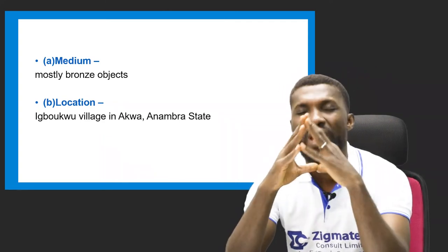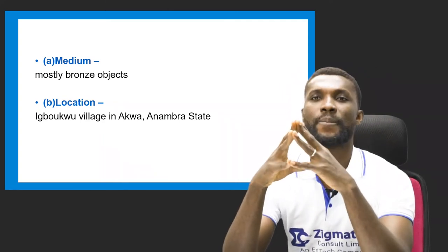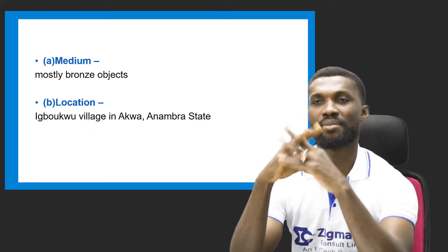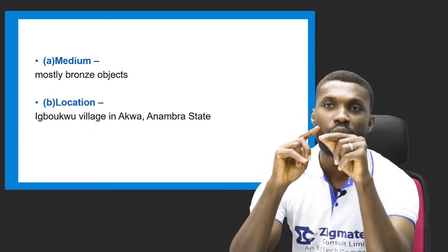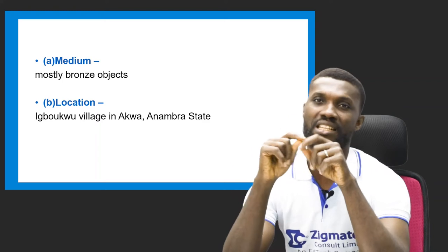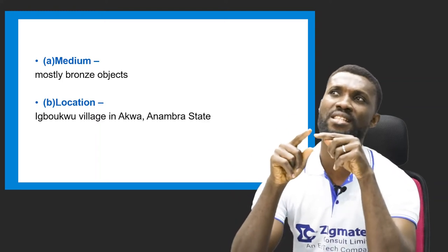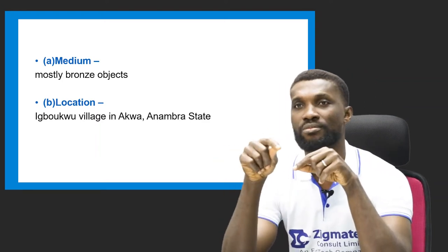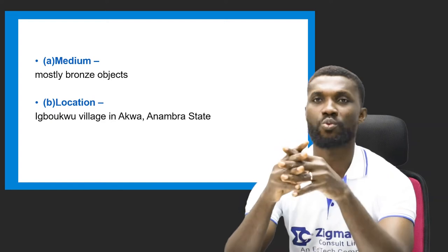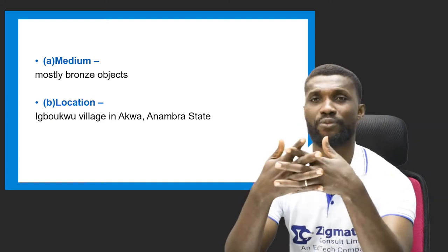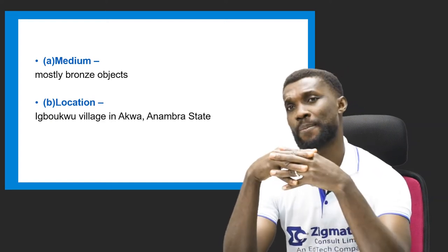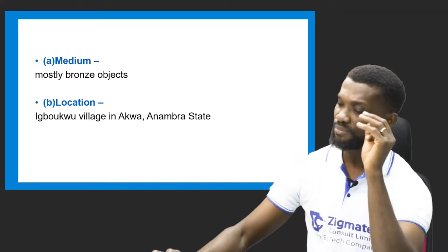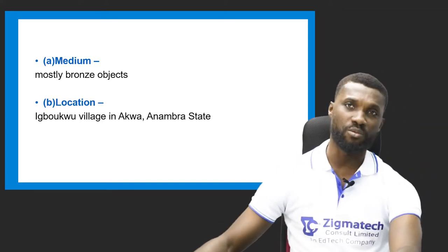Regarding the location: Igbo-Ukwu is a village in Oka, in Anambra state. There is even an Igbo-Ukwu museum there, so you can actually go and see some of these works. They are beautiful works that are still standing the test of time after all these years.